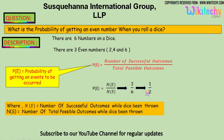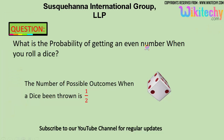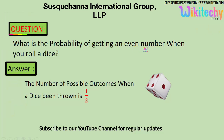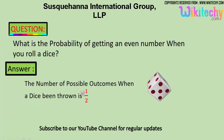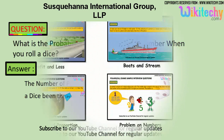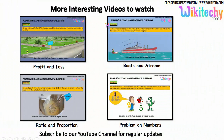Three divided by six gives you one by two. So the probability of getting an even number when you roll a dice is one by two — that is the answer.